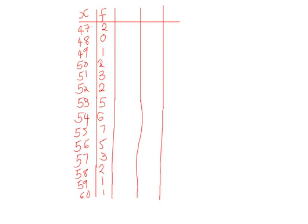Our third column will have T, which is given by the value of x minus the assumed mean. So the first one will be 47 minus 53, which is negative 6. 48 minus 53, negative 5. 49 minus 53, which gives us negative 4.